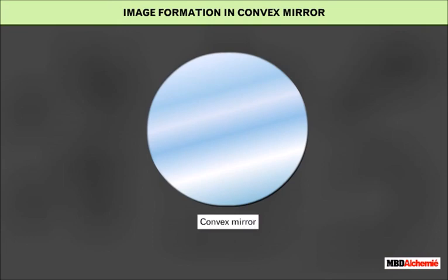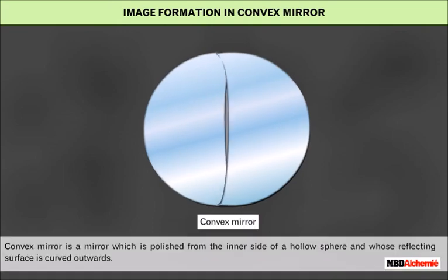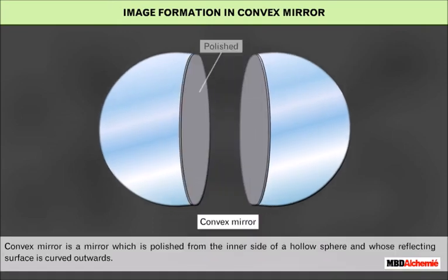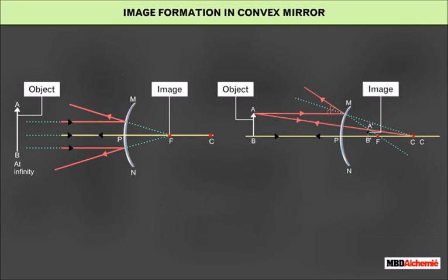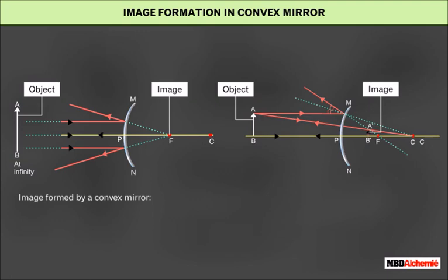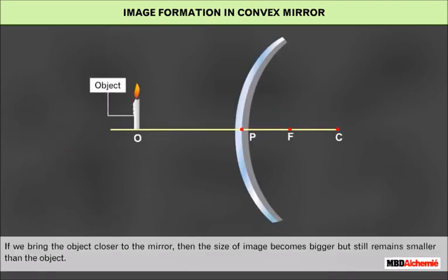Image Formation in a Convex Mirror. A convex mirror is polished from the inner side of a hollow sphere and whose reflecting surface is curved outwards. Whatever be the position of object AB in front of a convex mirror, the image formed is always behind the mirror, virtual, erect, and smaller than the object. If we bring the object close to the mirror, the size of the image becomes bigger but still remains smaller than the object.